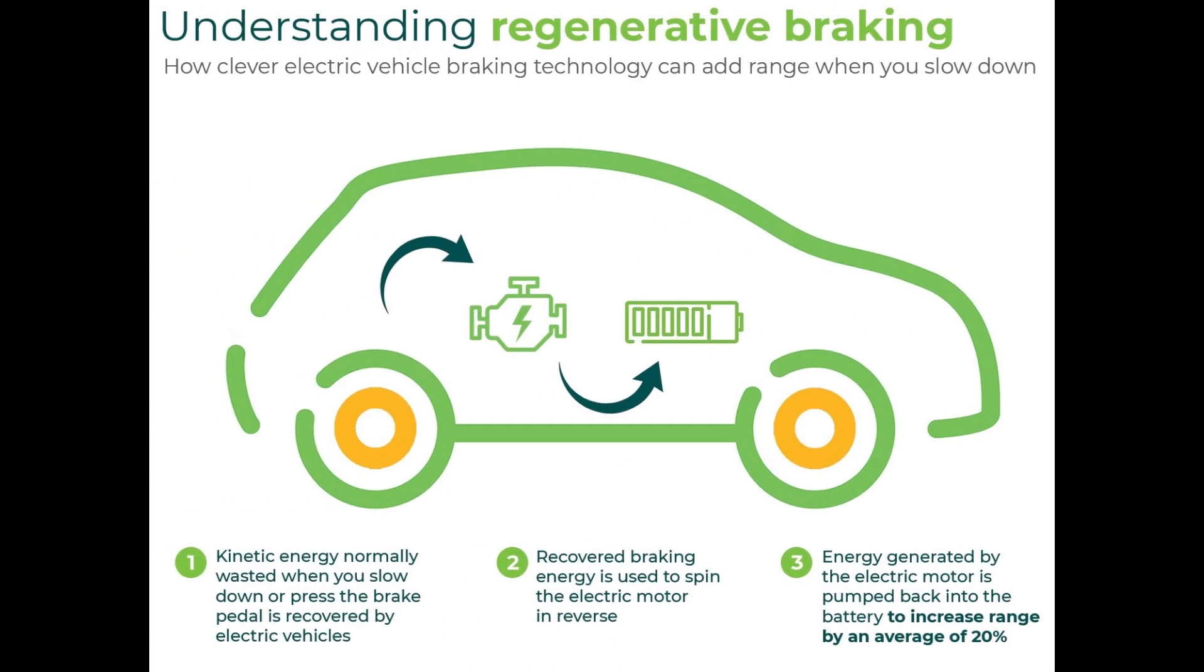How does the inverter intervene in regenerative braking? The inverter allows the flow of energy to be reversed. When the car decelerates, whether by releasing the accelerator, going downhill or braking, the motor acts as a generator. At that moment, the inverter channels the energy generated back to the battery.